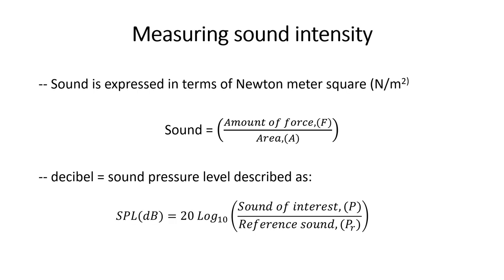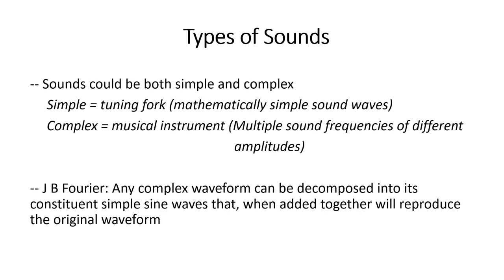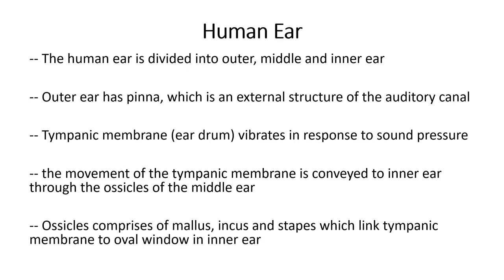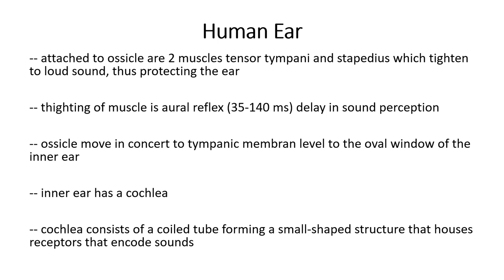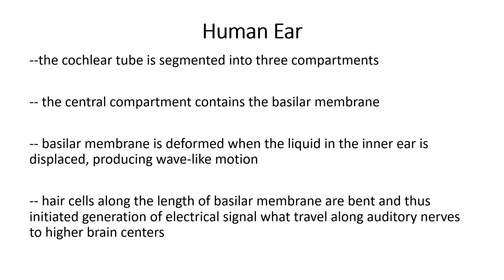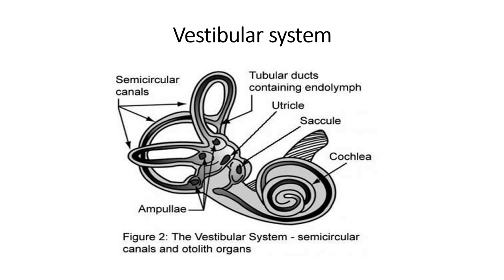Quickly reviewing what we did in the last lecture: we understood what sound is and how it is produced. We looked at how sound is measured, the different types of sound, and how complex sound can be expressed as simple sound using the Fourier theorem. Further, we looked at the human ear — I described the physiology of the outer ear, the inner ear, and the middle ear, and explained how sound is registered and interpreted. Lastly, I discussed the vestibular system, which is associated with the human ear and helps us in maintaining position.